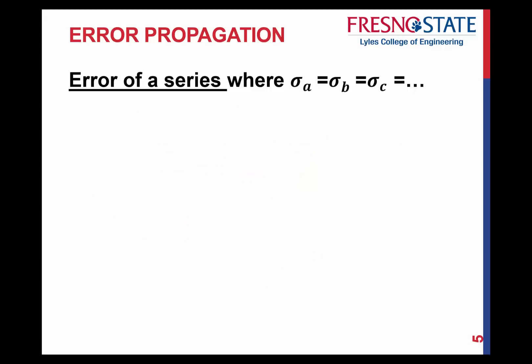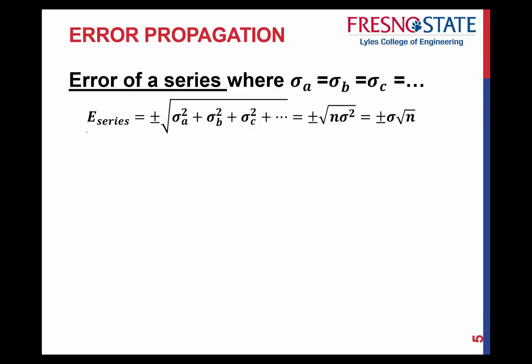Now let's look at the error of a series. This means that the standard deviation of every observation is the same. The formula looks exactly like what we just saw in the error of a sum — variance of A plus variance of B plus variance of C and so on. Since every standard deviation is the same, it simplifies the formula. If you recognize that the standard deviations are the same for every single one, you can directly use the error of a series formula.